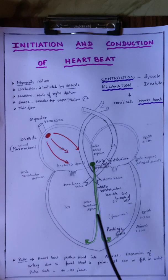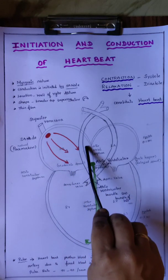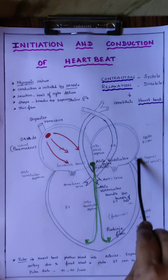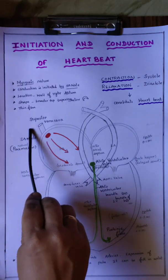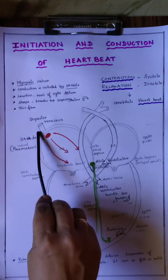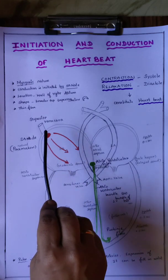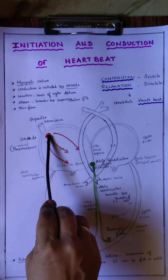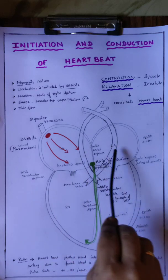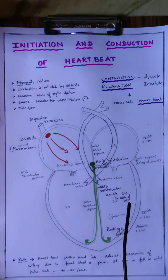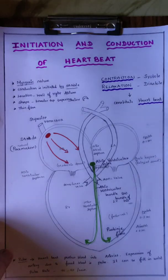This conduction is done with the help of the SA node. The SA node is a very important pacemaker of the heart. Without it, or if it is not producing normal impulses, the heart cannot pump properly. Thank you, children.